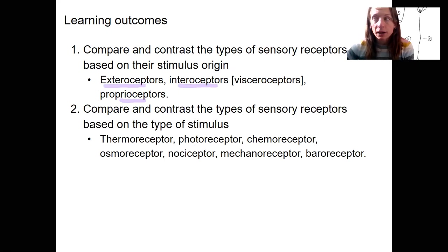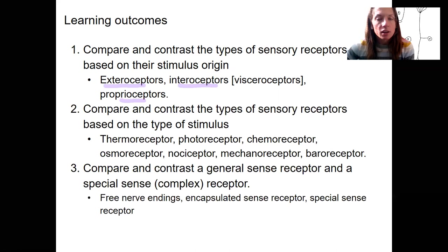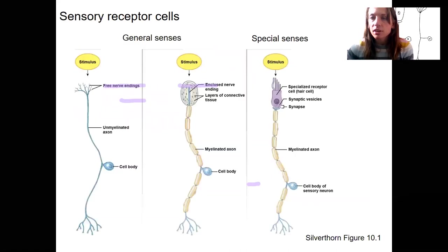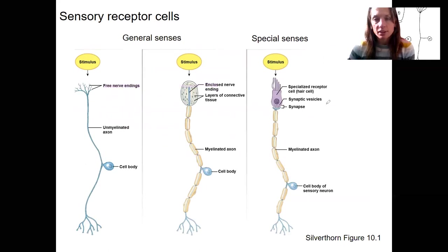We talked briefly about general sense receptors versus special sense receptors — the special senses being more complex and typically involving a separate cell. Right now I want to remind you of that distinction: the general senses versus the special senses. This is the image I just showed you in the previous segment showing that separate cell.